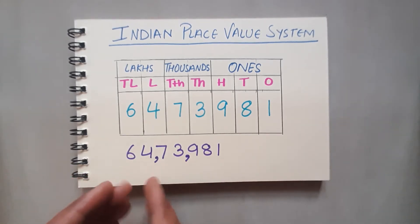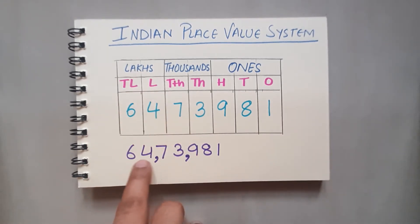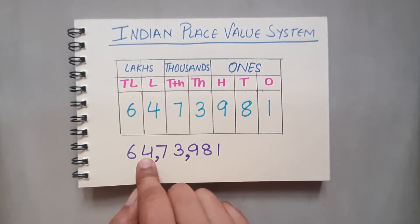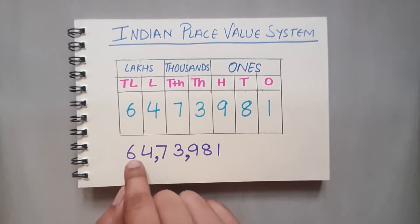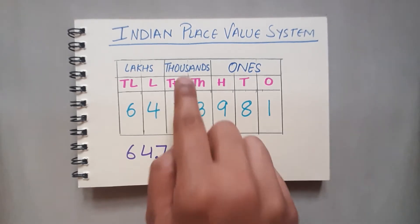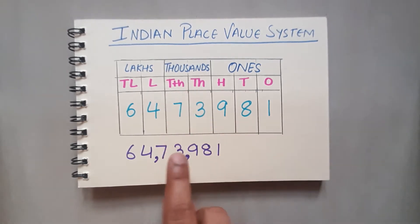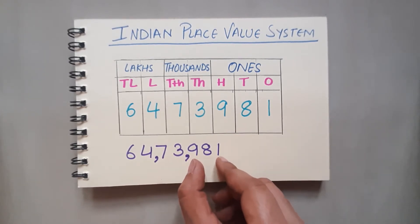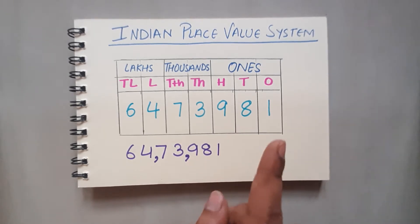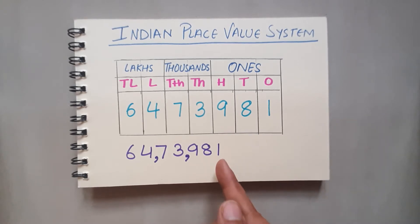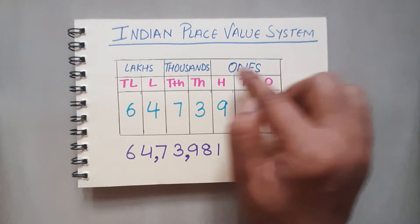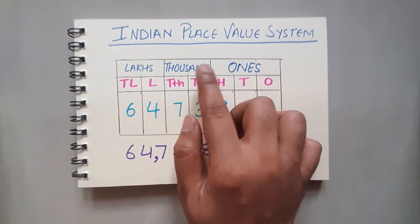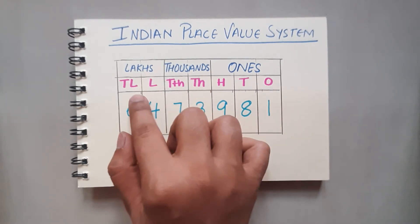Now looking at this large number with the commas, you can say that this is sixty-four lakhs, seventy-three thousands, nine hundred eighty-one. Periods help us to read the large number. For the lakhs period, we read the numbers together — it is sixty-four lakhs, not sixty-six ten lakhs or four lakhs separately. Similarly, seventy-three thousands is one period, and 981 is the ones period. Remember: when marking periods in a large number, you always start from the ones period.